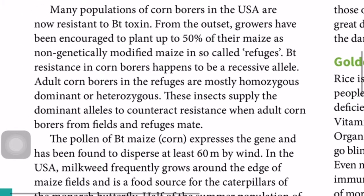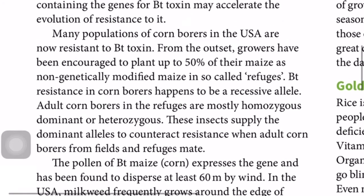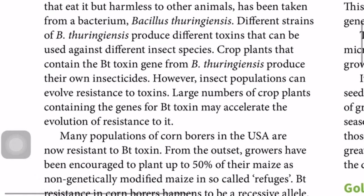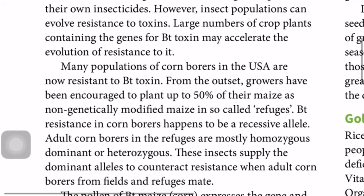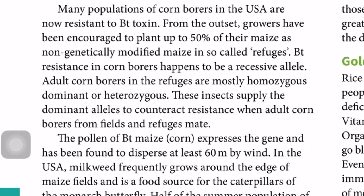Many populations of corn borers in the USA are now resistant to Bt toxin. Large numbers of crop plants containing the Bt toxin gene from B. thuringiensis produce their own insecticide. However, insects in populations can evolve resistance to toxins — the widespread use of Bt toxin changes the environment of insects, causing them to evolve resistance. Preventive measures are therefore needed.